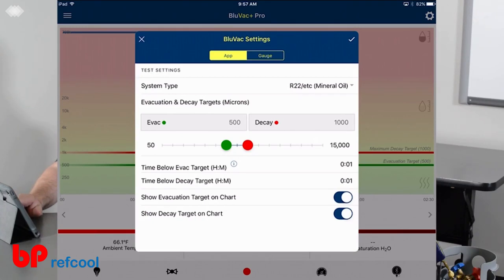I also have my time below target times here. Both of these are set at one minute. I'm going to hold the evacuation below 500 for a minute, and I'm going to allow it to decay for a time of one minute. Typically, these would be set for 10 minutes. But because we're doing the video for the sake of time, I'm allowing it to do these processes a little bit faster.